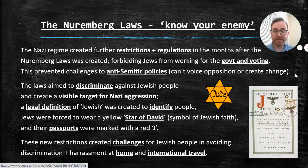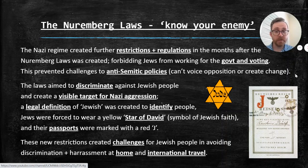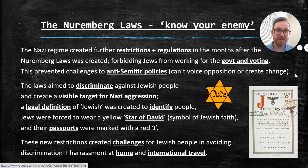The Nuremberg Laws: know your enemy. The Nazi regime created further restrictions and regulations in the months after the Nuremberg Laws were created, so this was the first step towards something bigger. Forbidding Jews from working for the government and from voting took away their civil and political rights. This effectively removed any opposition from Jewish people — you can't challenge anti-Semitic policies if you cannot vote on them, can't get into government to create change. It effectively removed any resistance.